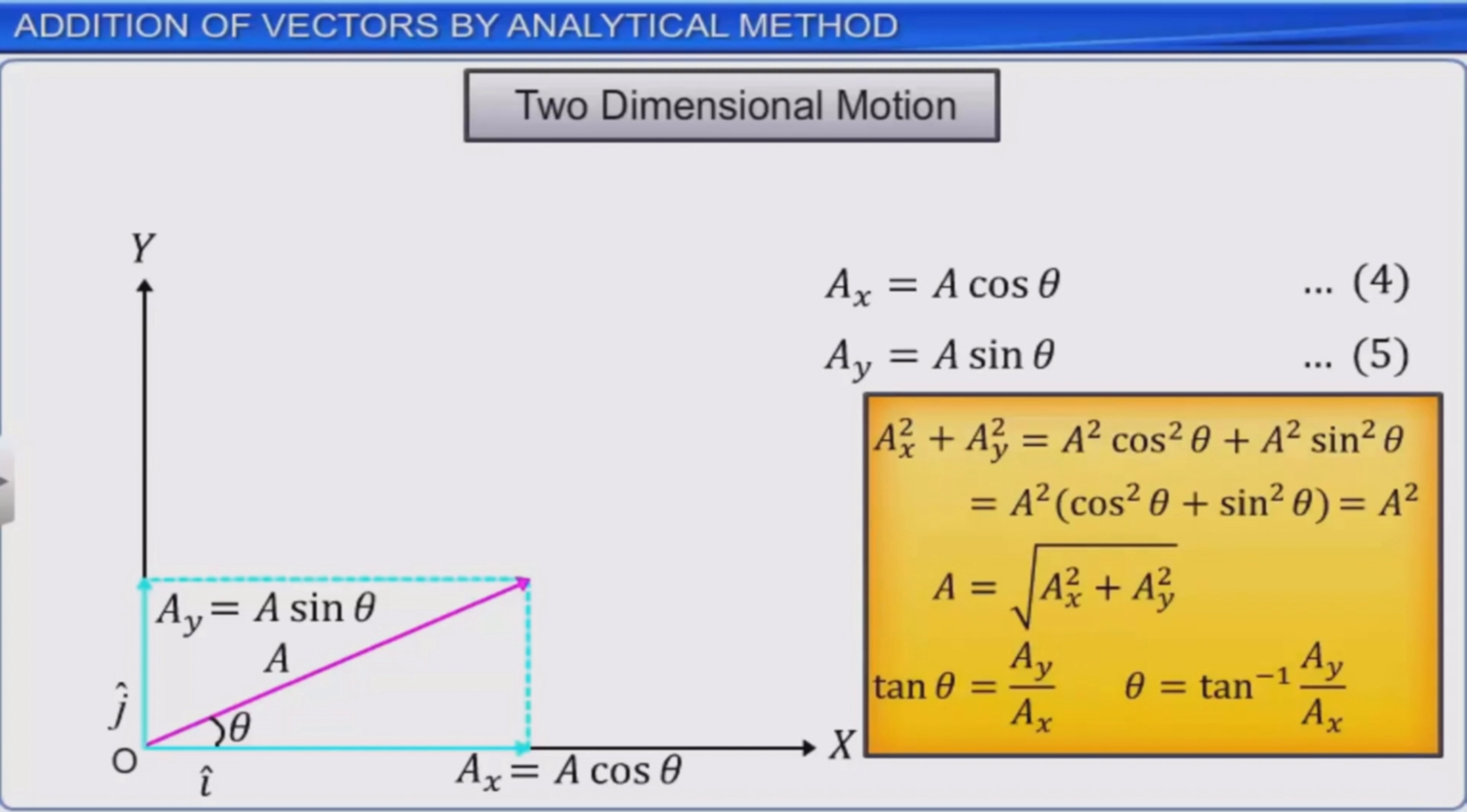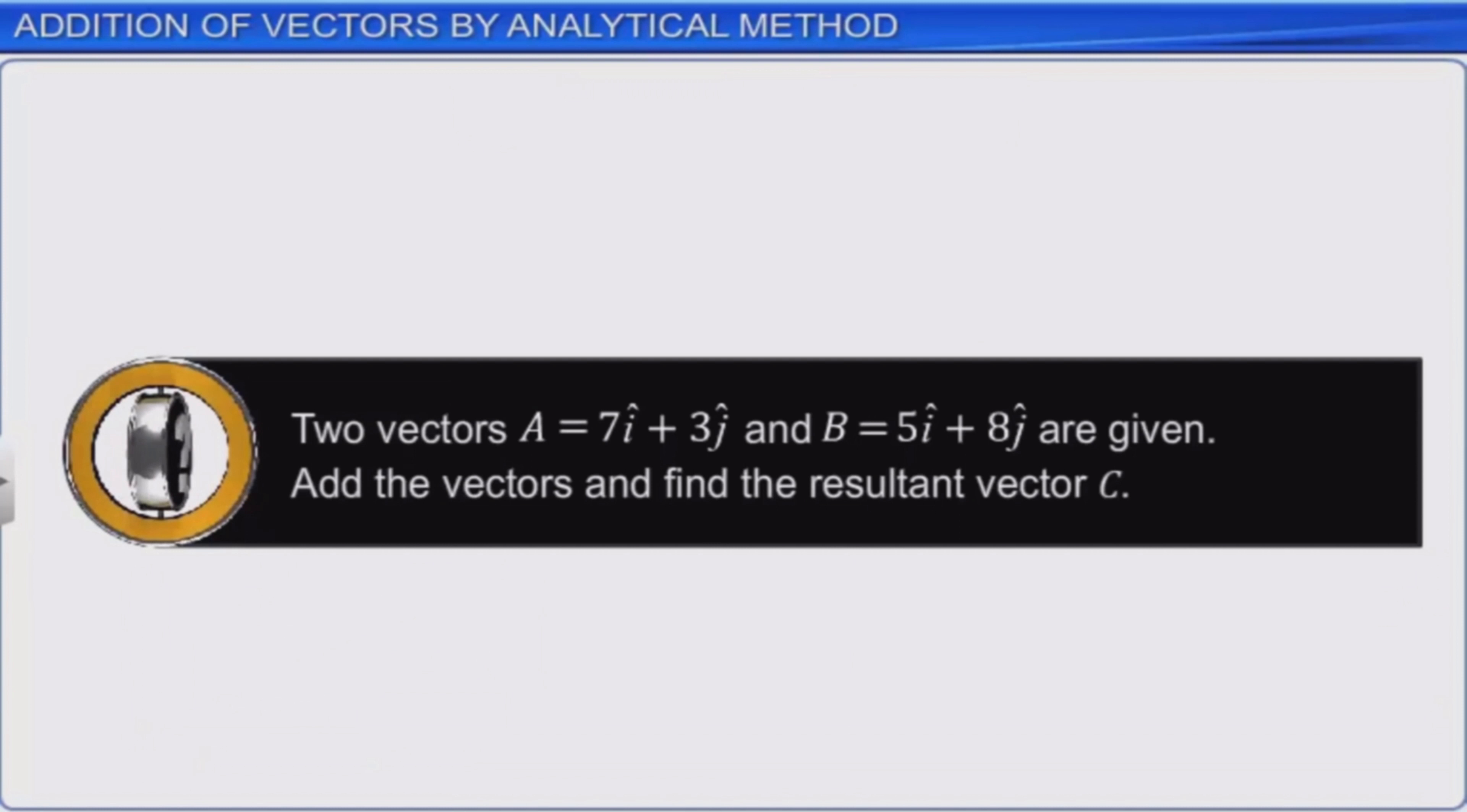Now let us solve a simple problem to understand the procedure associated with this method. Two vectors A is equal to 7i plus 3j and B is equal to 5i plus 8j are given. You are asked to add these two vectors and find the resultant vector C.